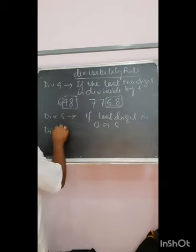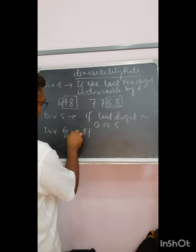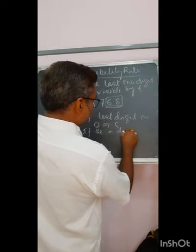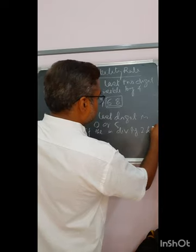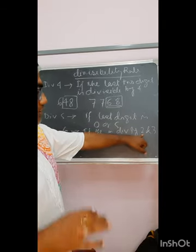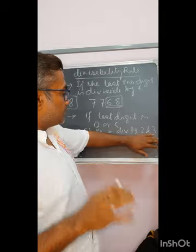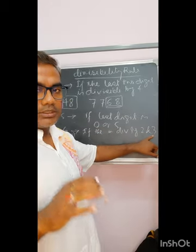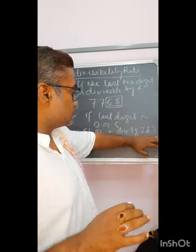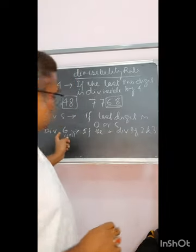Next comes divisibility by six. Here it is a combination, because six equals two times three. So if the number is divisible by both two and three — the divisibility rule of two being that the last digit is 0, 2, 4, 6, or 8, and the divisibility rule of three meaning you add up the digits and if that sum is divisible by three — if both conditions are fulfilled, then the number is divisible by six.